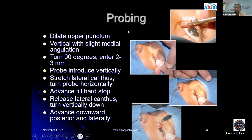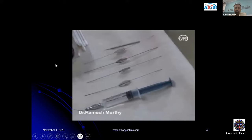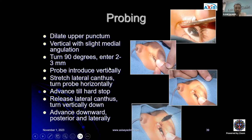For the probing technique: dilate the upper punctum first with a vertical movement and slight medial angulation, turn 90 degrees, enter 2–3 mm. Introduce the probe vertically, stretch the lateral canthus, and turn horizontally until it hits the medial bone — a hard stop. Release the lateral canthus and gently turn the probe vertically down, moving slowly downward, posteriorly and laterally. When the bony block is felt, try to bypass it.